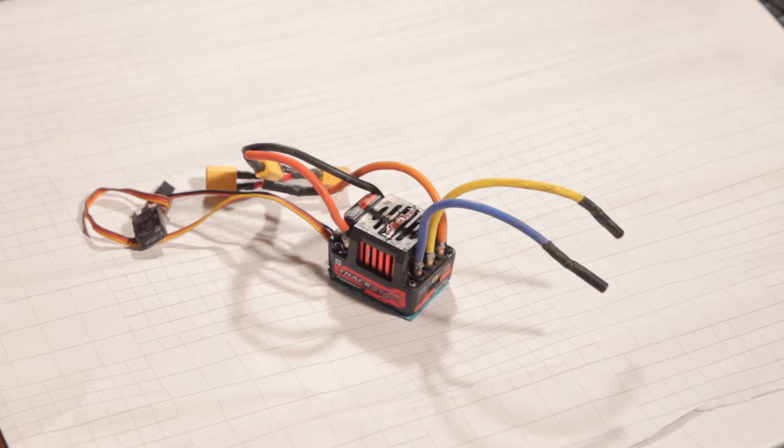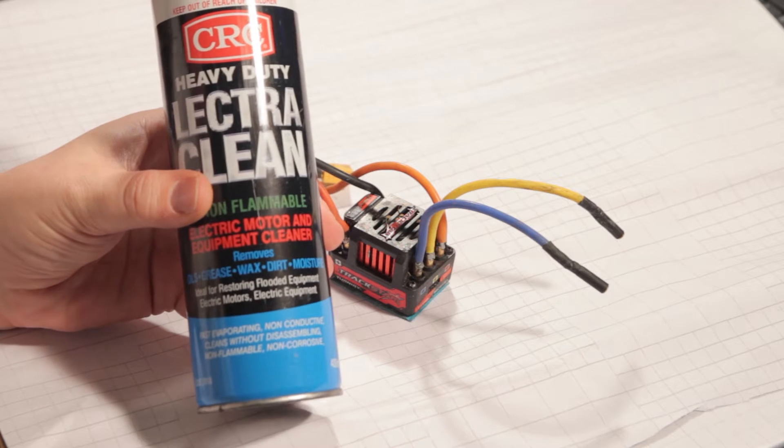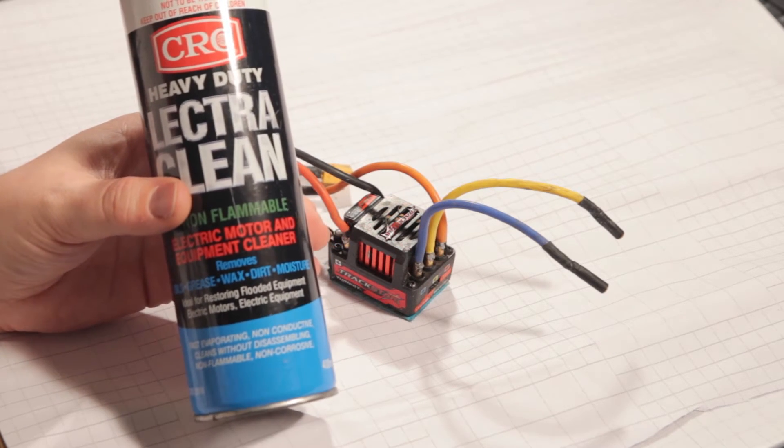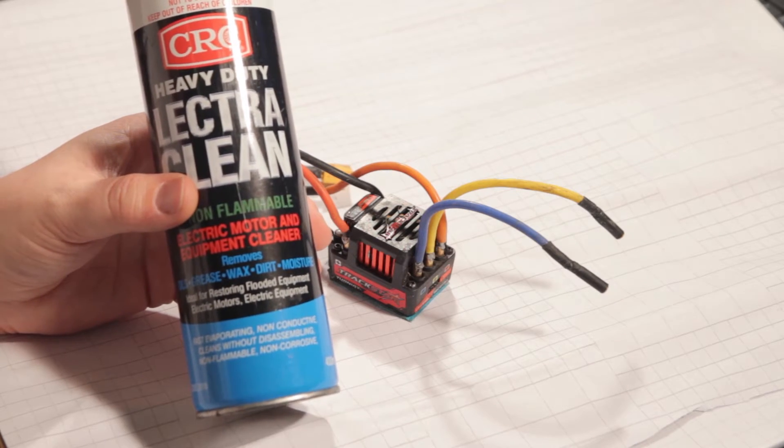We're going to go ahead and use a CRC product, ElectroClean, to clean the PCB and all the electronics. This stuff's really potent. Don't get it near plastic because it will melt it. I found that out the hard way.